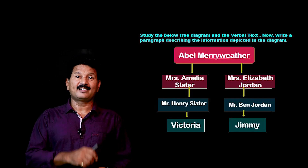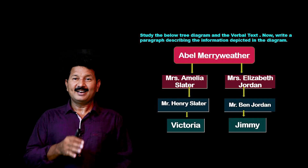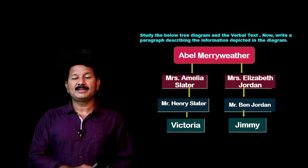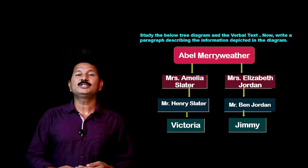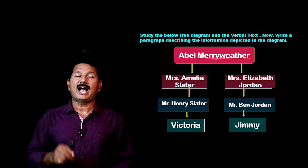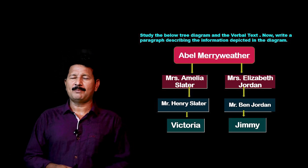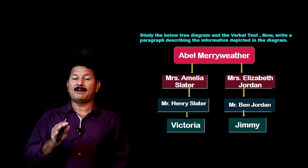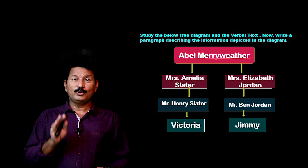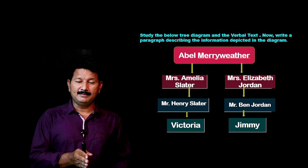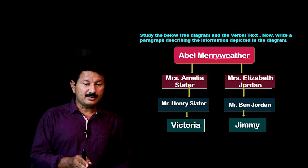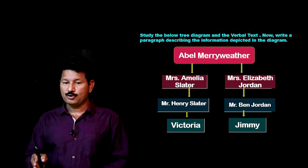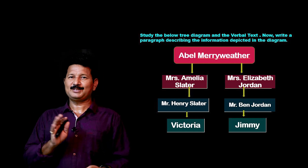Now we will go with another kind — the tree diagram. Study the tree diagram and the verbal text, and write a paragraph describing the information given. For convenience, I've taken this from our reader. We all know about the lesson 'The Dear Departed.' The tree shows Abel Merry Weather at the top.